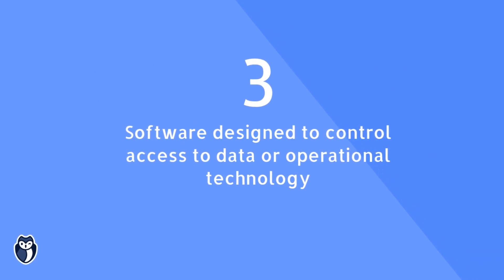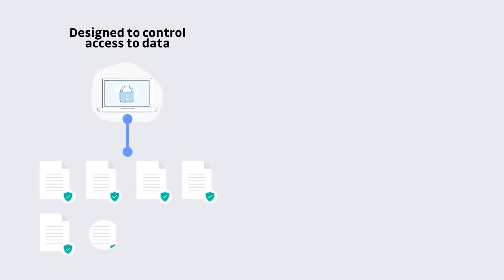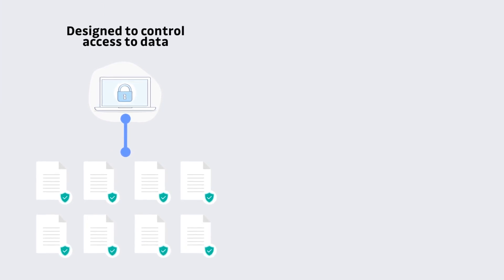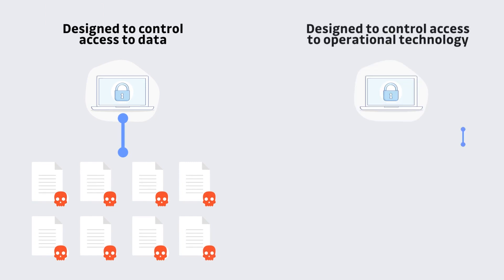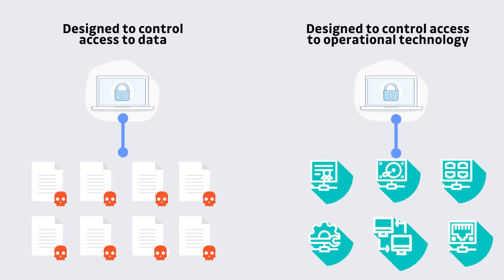The third point from NIST was software that controls access to data or operational technology. This really has two implications. Firstly, it can be used by hackers to gain access to company data for exfiltration or encryption — for instance in a ransomware attack — or to get access to other technology in the company. Secondly, it can be used to cripple the business by making these resources unavailable. The two biggest examples are ransomware, as seen in the Colonial Pipeline attack earlier this year, and distributed denial of service — DDoS — attacks, such as when the New Zealand Stock Exchange went down last year due to a persistent DDoS attack. Software that controls access to data or operational technologies really needs to be considered as critical software because of the massive effect an attacker can have.